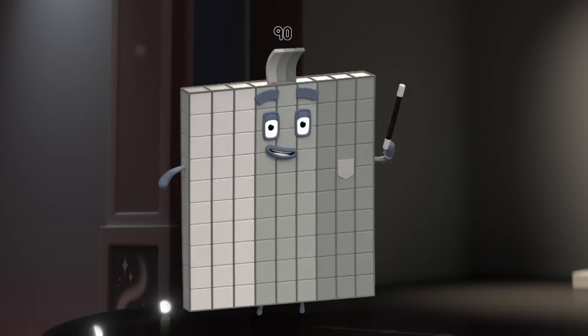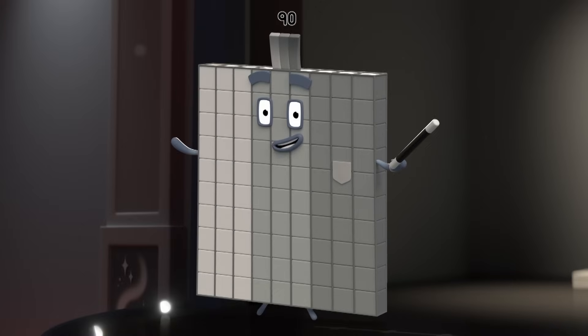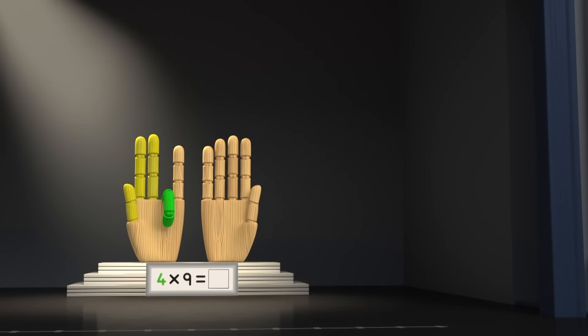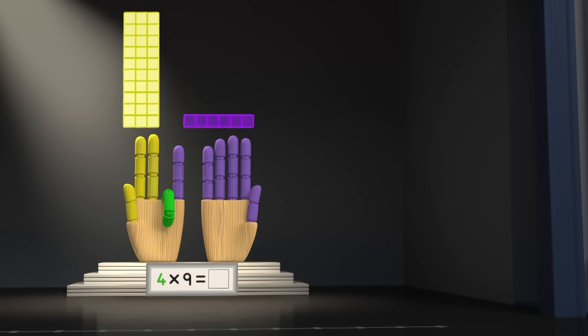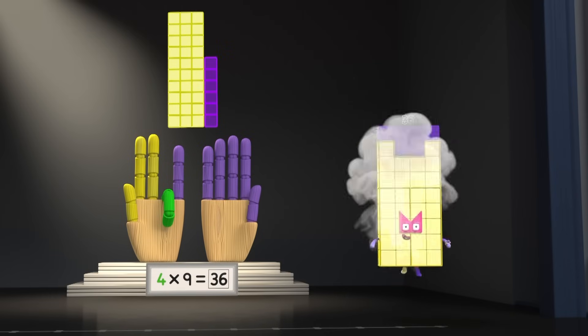Now, who's fourth in our magical family? Four finger down. Three fingers to the left means three tens. Thirty. And six fingers on the right makes... Thirty-six!